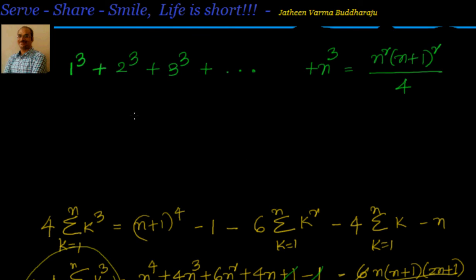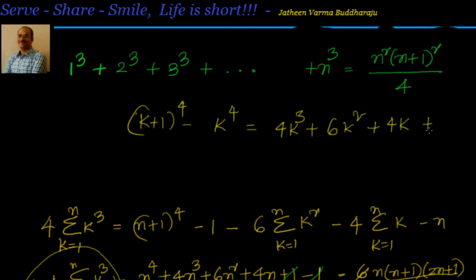To summarize, we leveraged the identity k plus 1 whole to the power of 4 minus k to the power of 4 equals 4k cube plus 6k square plus 4k plus 1. By substituting different values of k and adding them, the left side telescopes. The remaining terms use the known sum of squares and sum of first n natural numbers formulas, and simplifying gives the result: 1 cube plus 2 cube plus 3 cube up to n cube equals n squared into n plus 1 whole squared by 4. See you in the next session, thanks for visiting, bye for now.